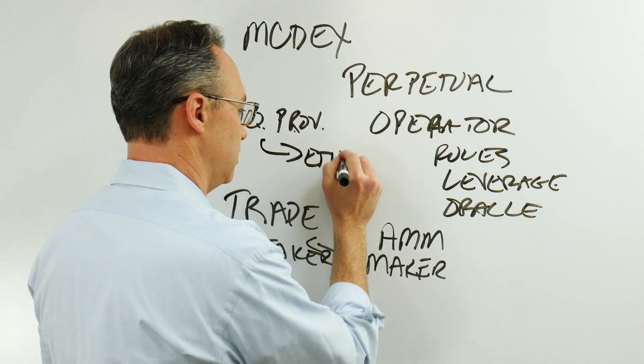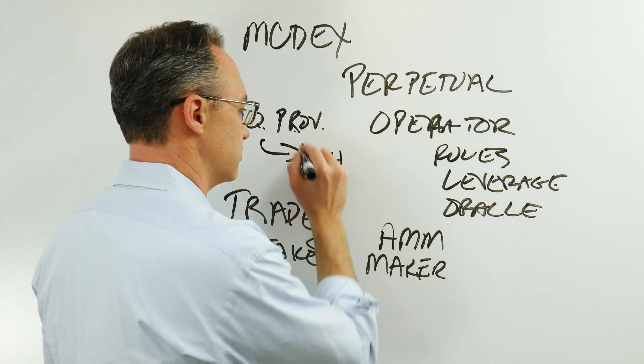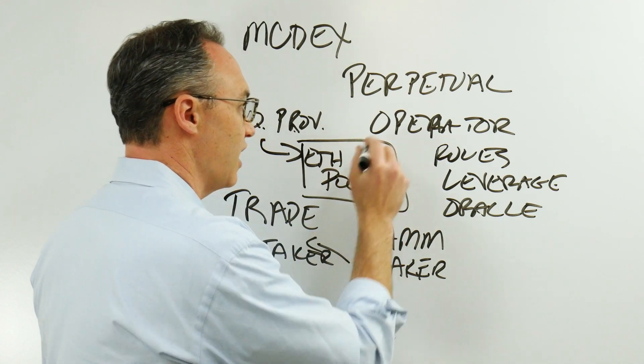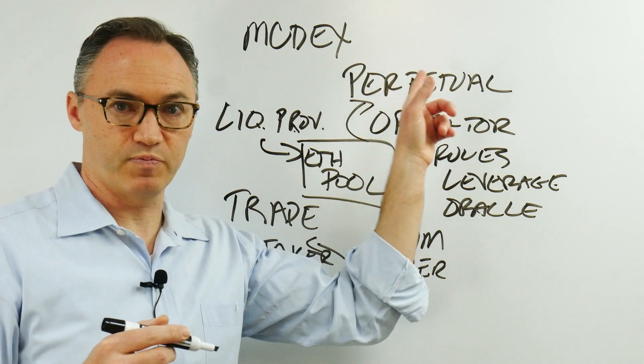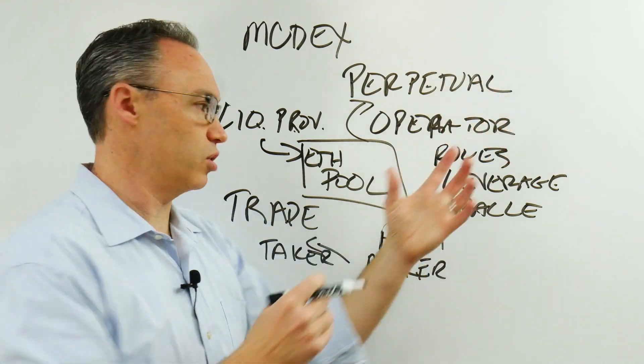The liquidity providers can provide this in ETH or any other digital asset into this pool here, and this pool is only used probably for this particular perpetual. If this is oil, this pool is used.